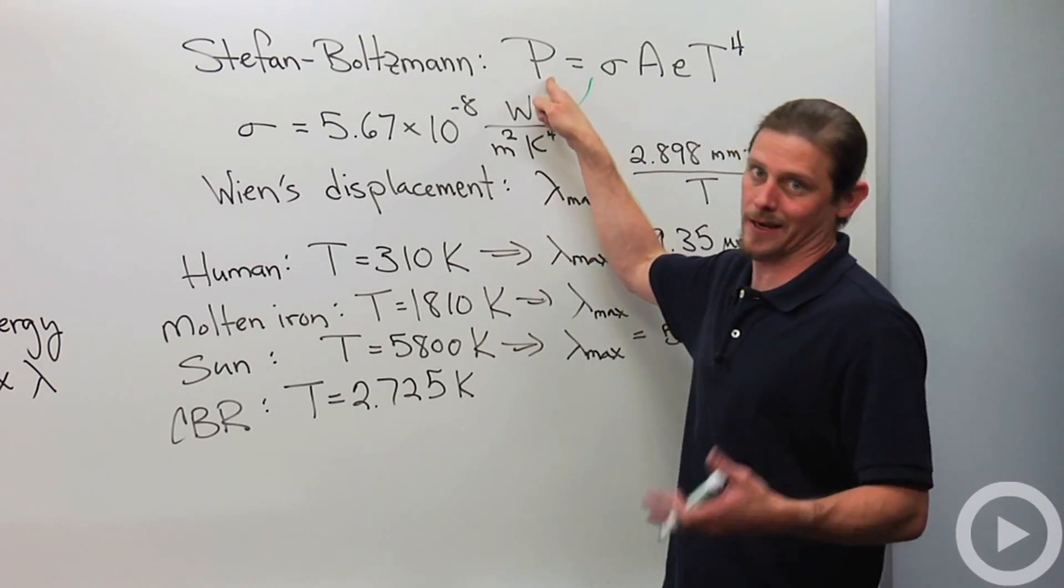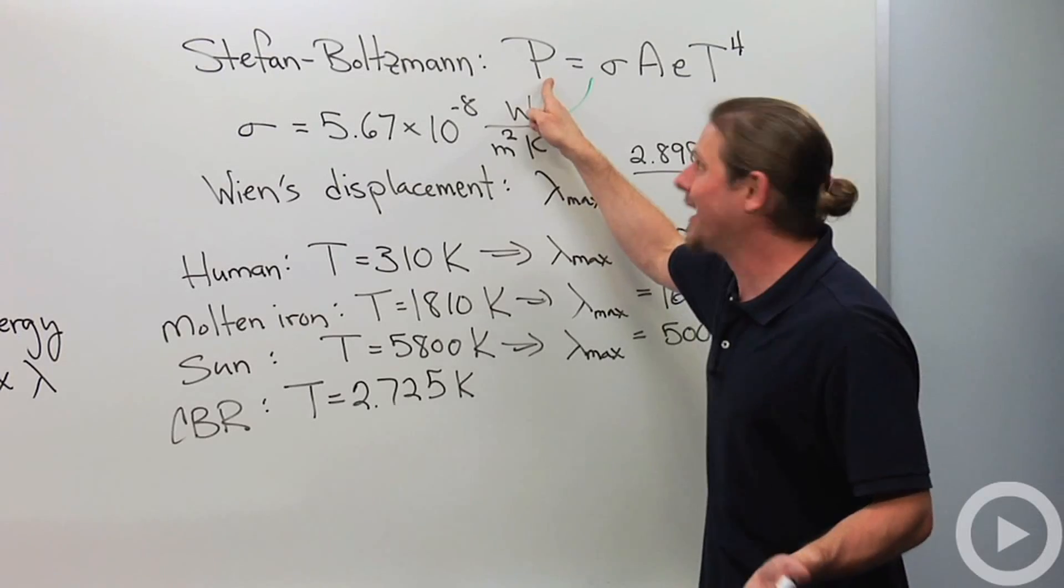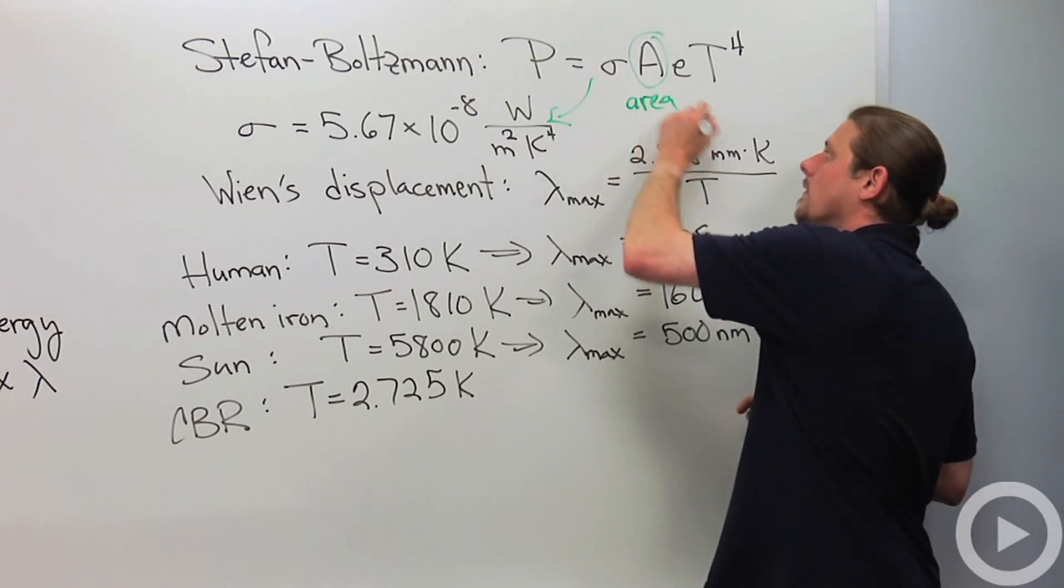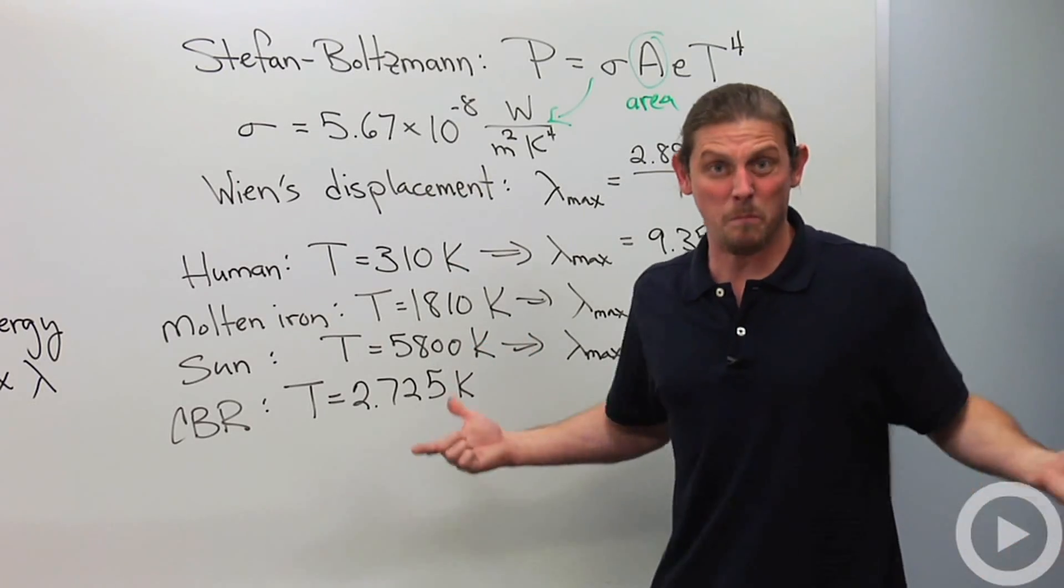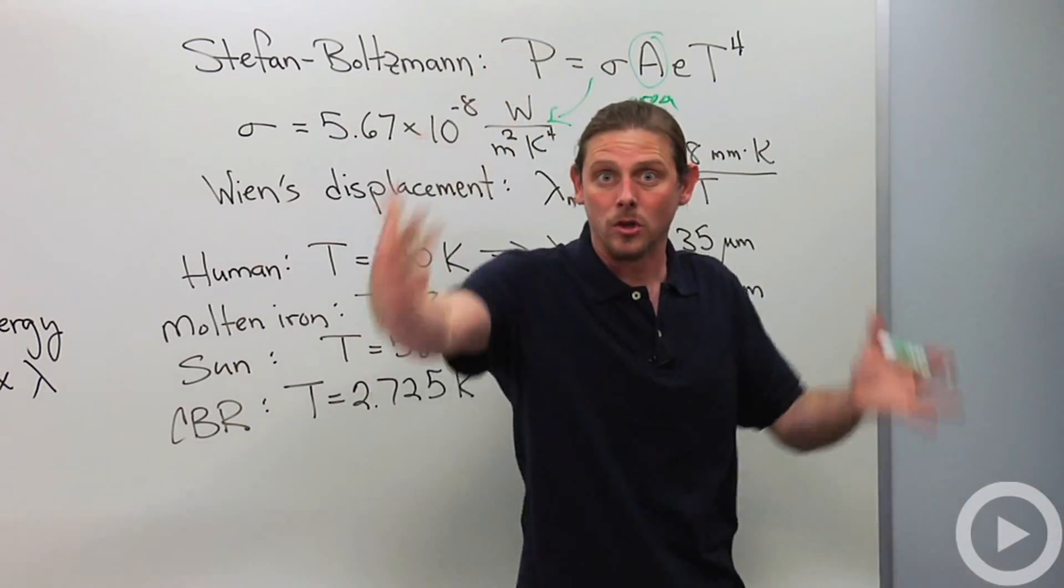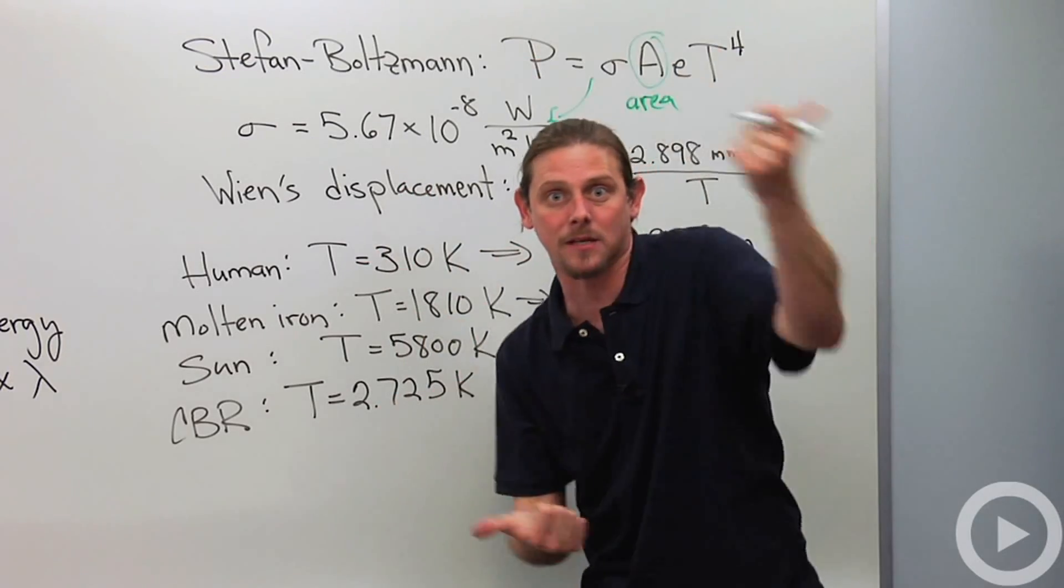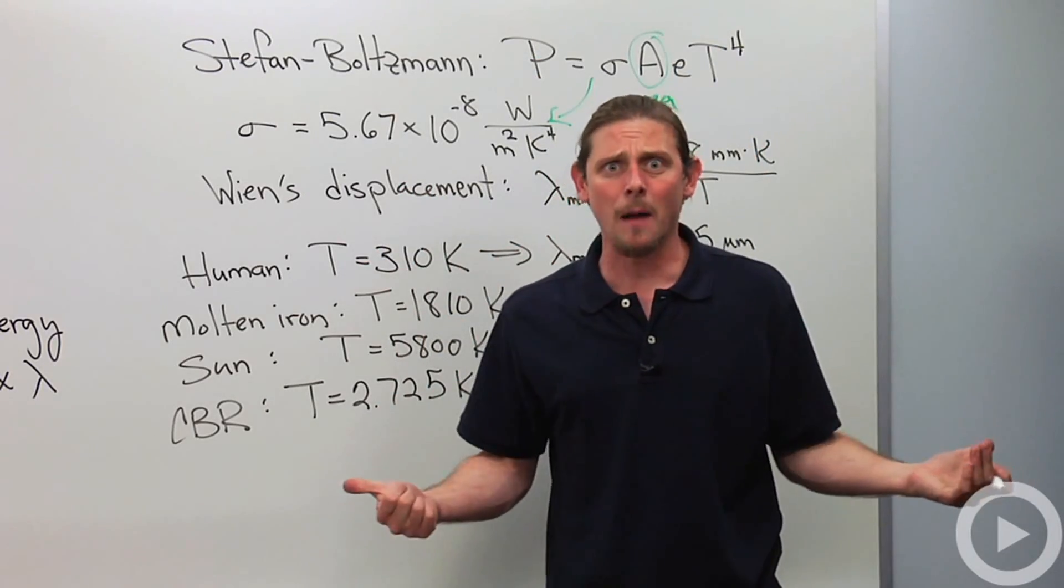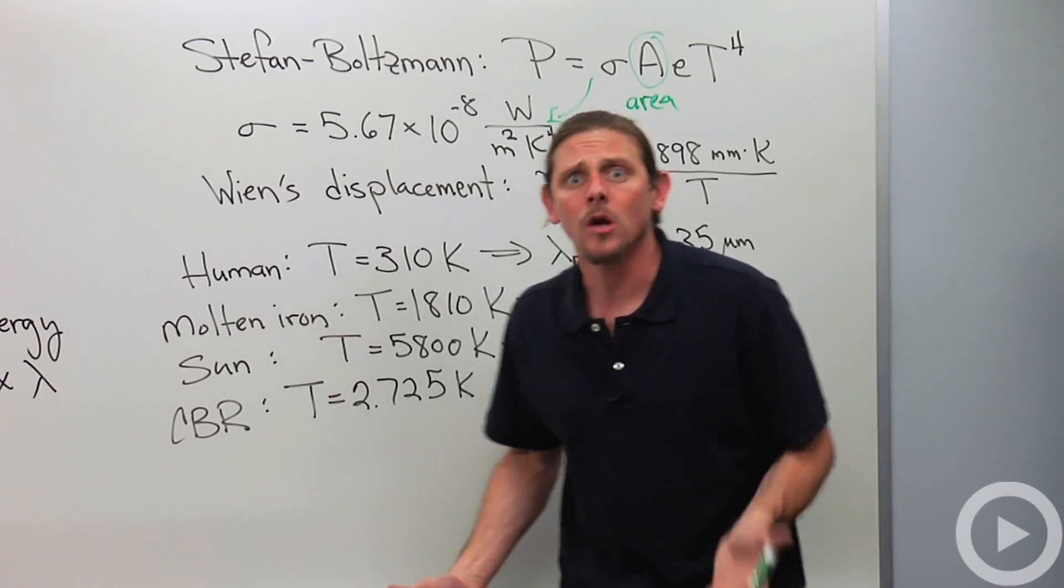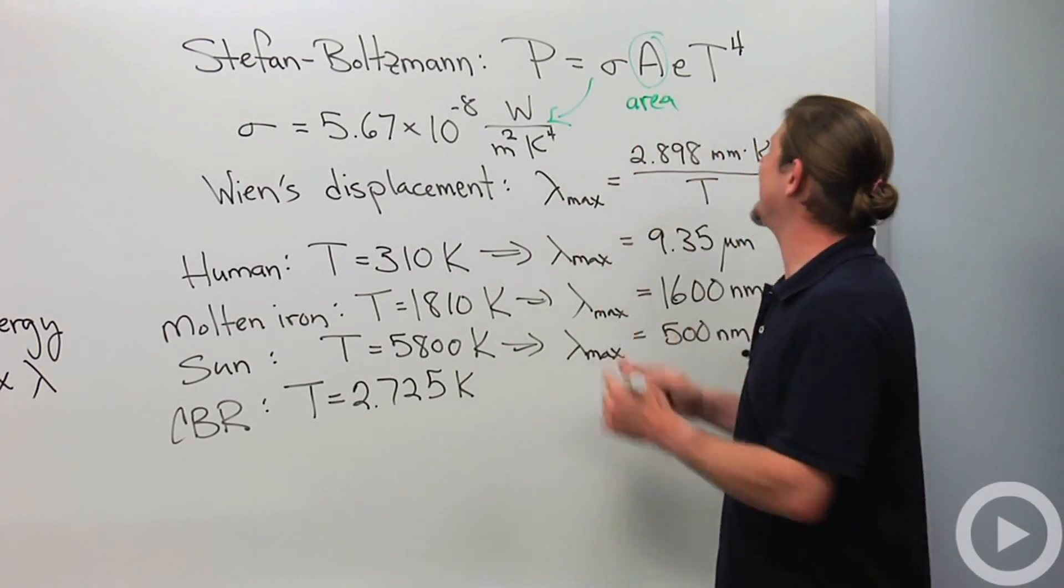Now, that unit, of course, you can get just by saying the power has to be watts, and look what I'm multiplying by. This is the area, the surface area of the object. Obviously, if it's bigger, it's going to radiate more. I mean, think about the Earth. The Earth is radiating through every little piece of its surface area. So, it's a lot bigger than a beach ball. So, I would expect it to radiate a lot more energy. So, that's why the area is there.